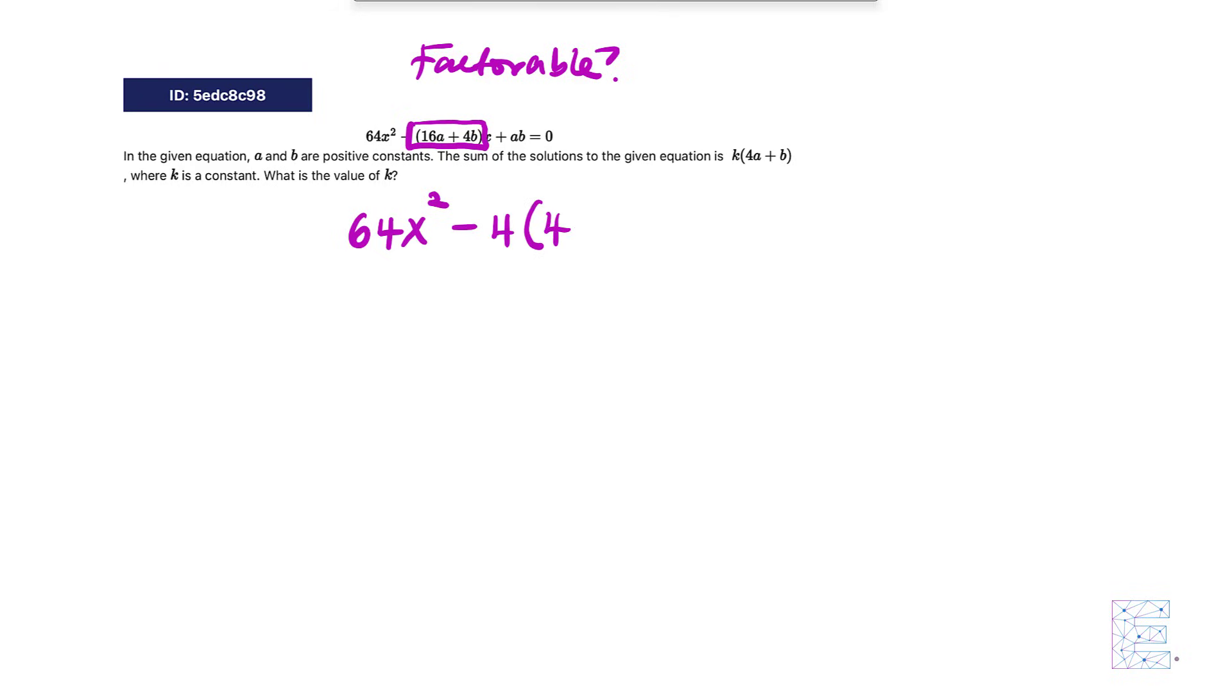What can we factor out? A 4. So we take out a 4, we are left with 64x² - 4(4a + B) + ab = 0.